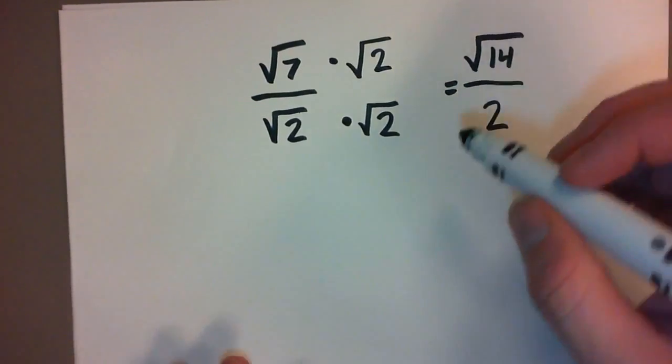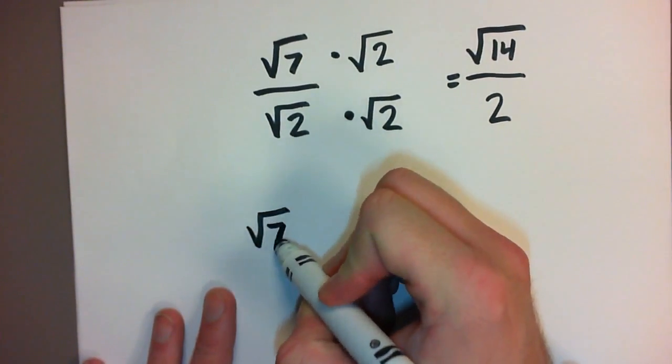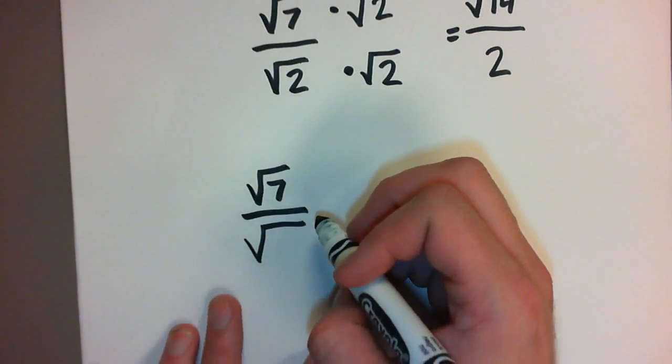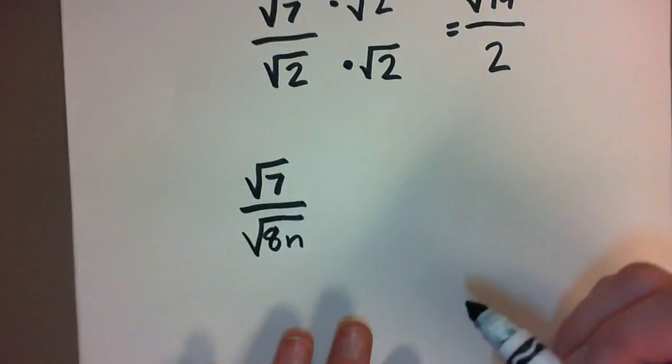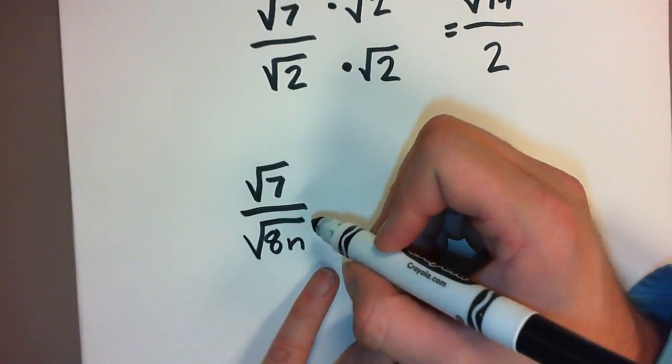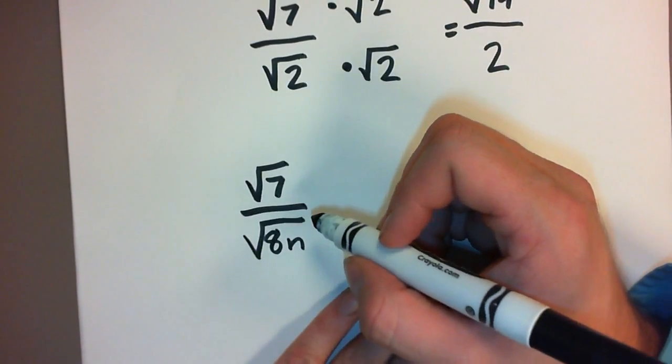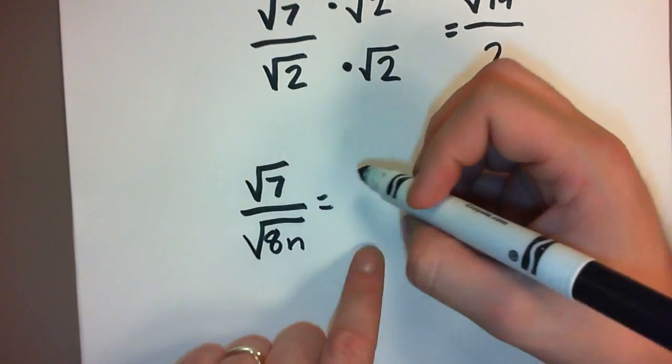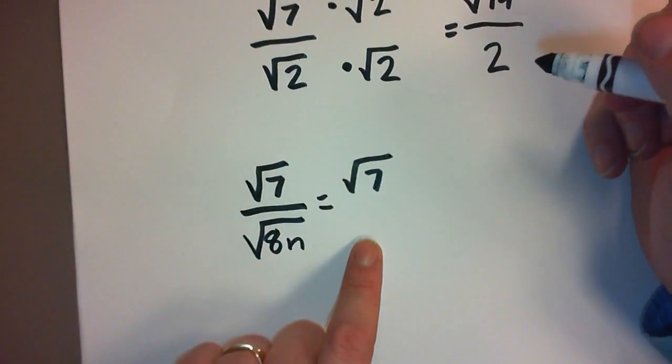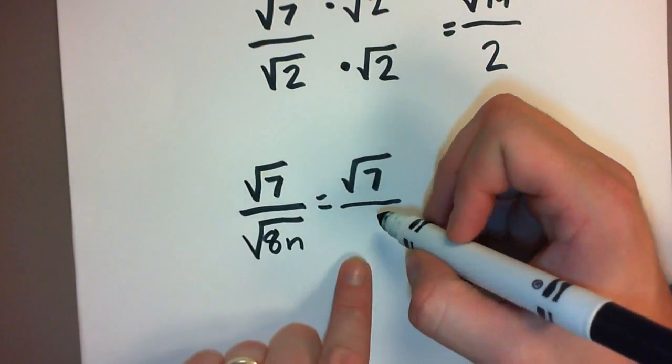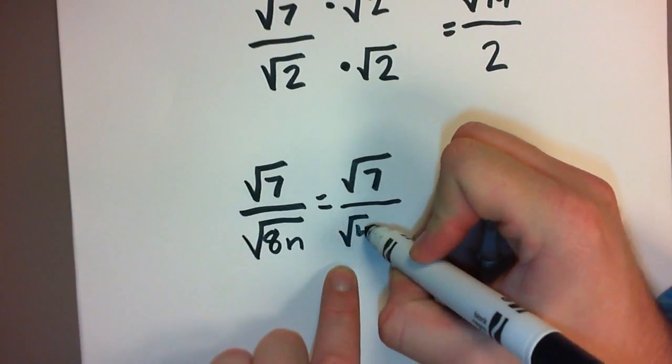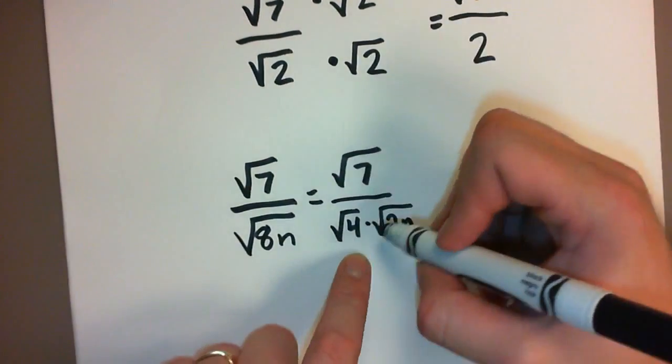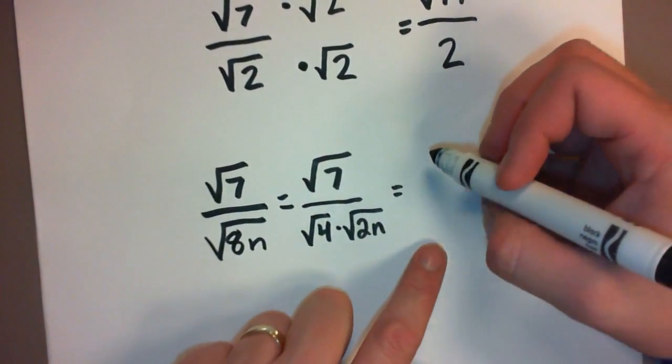Let me do another example. This is example B, or example 4 part B. This one is the square root of 7 again over the square root of 8n. So one of the things that we like to do when we're simplifying square roots is to simplify the radicals on the top and the bottom first. The square root of 7 I can't simplify because 7 is a prime number, that's just got to stay like that, but 8 is 4 times 2.